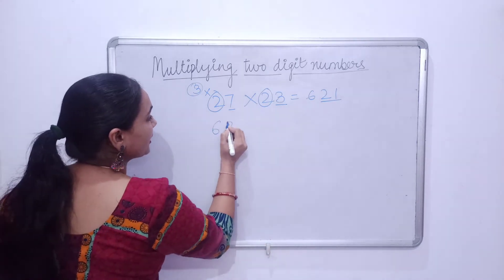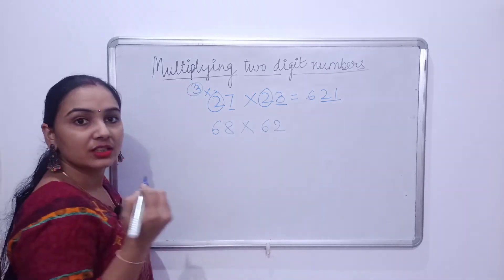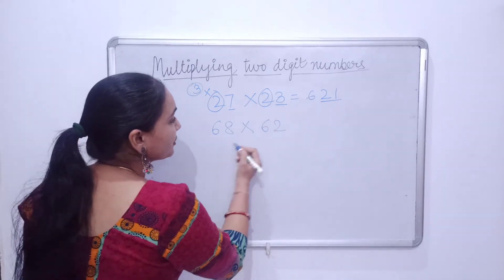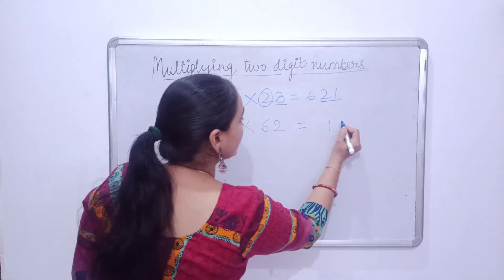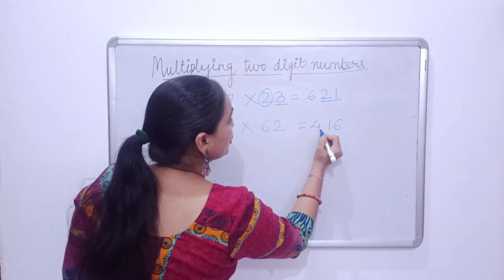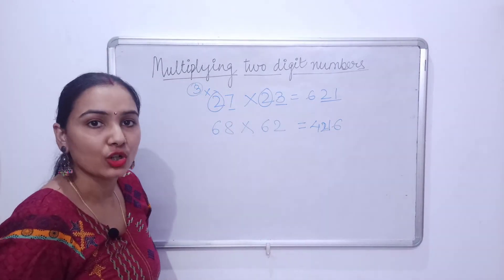Suppose we have to take another number here: 68 into 62. So now, what will the answer be? 8 times 2 is 16, and 6 times 7 is 42. So 4216 is your answer.